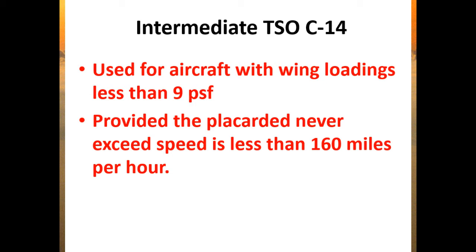If we had wing loading under 9 pounds per square foot but our VNE speed is over 160 miles an hour, we're not going to use intermediate — we're going to have to go up to Grade A. What determines what type of fabric is used — intermediate or Grade A — is wing loading and the never-exceed speed. That is an FAA test question.